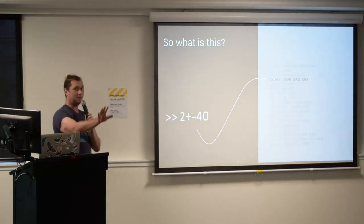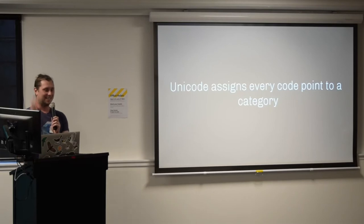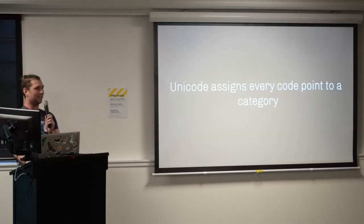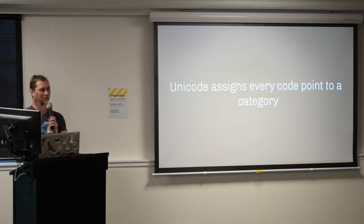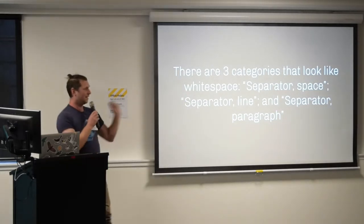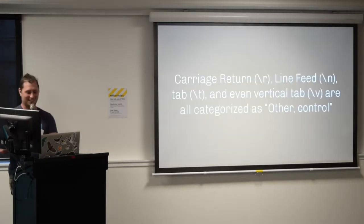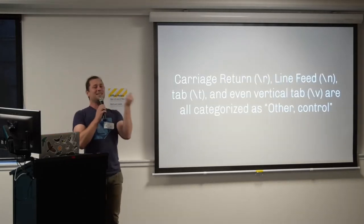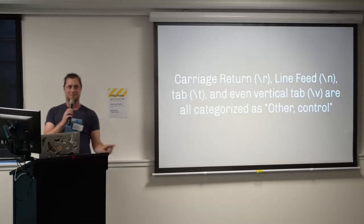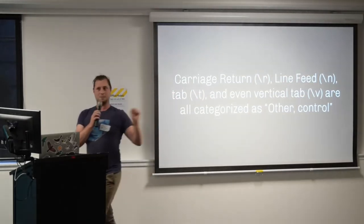So the ogham space mark is legal whitespace as defined by the standard. The Unicode standard has categories — separate-space, separate-line, separate-paragraph — that look like they might mean whitespace, but none of them are what you think: carriage return, line feed, tab, and even vertical tab are not included in those categories. They are control characters and are not defined as whitespace in the Unicode standard. So if you want to be Unicode-compliant, your naive interpretation of whitespace will not be correct.